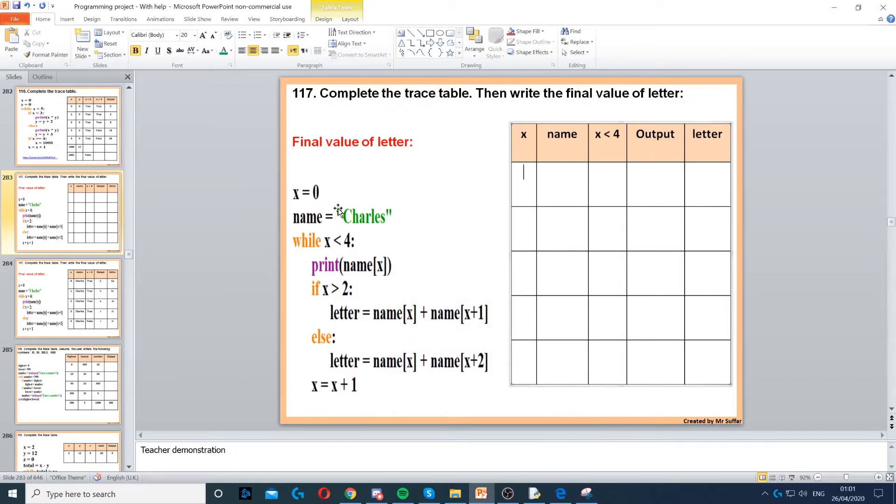For this question, first we have x equals 0, so we set x to 0. Then it says name is equal to Charles, so we put Charles as the name. You can see that the name never changes, so it will stay Charles throughout.